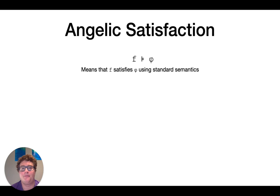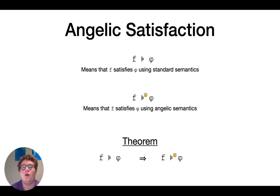So now that we have angelic semantics, let's talk about angelic satisfaction. F models phi is the standard way of saying that F satisfies phi using standard semantics. So now we add in this new thing, which is F angelically models phi. So it's saying that F satisfies phi using angelic semantics under phi. And we have a theorem that the angelic satisfaction over approximates standard satisfaction.